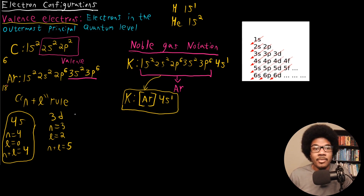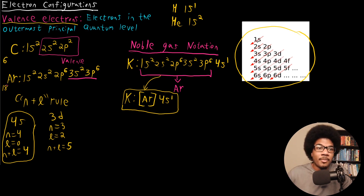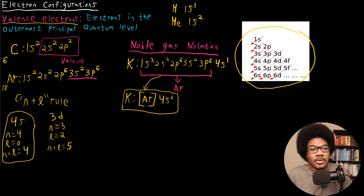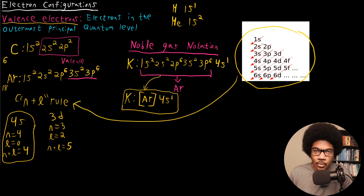If you don't want to check n plus l each time, there's a simple way to remember it using this figure. You write out all of the orbitals and stack them vertically, then draw diagonal lines starting at each orbital. That tells you how to fill up the orbitals according to the Aufbau principle: 1s, 2s, 2p, 3s, 3p, 4s, 3d, 4p, 5s, 4d — just keep following the diagonal line. This is a visual representation of the n plus l rule, ordering orbitals by their energy.